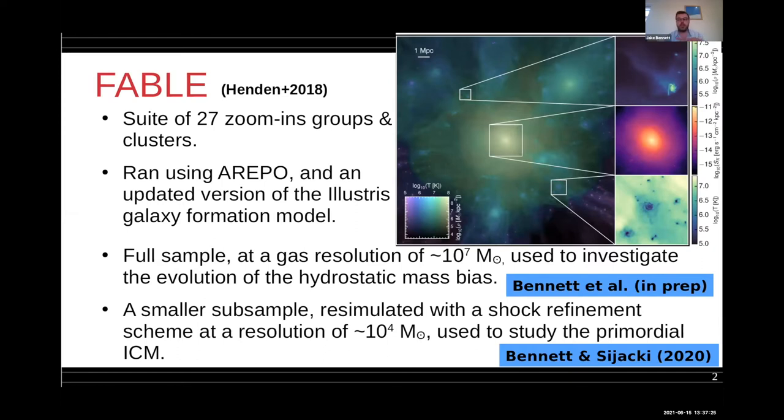I want to be talking about two different samples within that. The first is the full FABLE sample which has a gas resolution of about 10^7 solar masses, which is usually reasonable for cluster simulations in general.